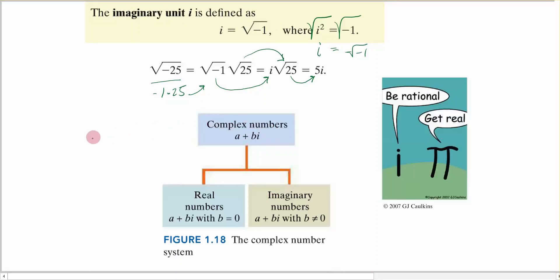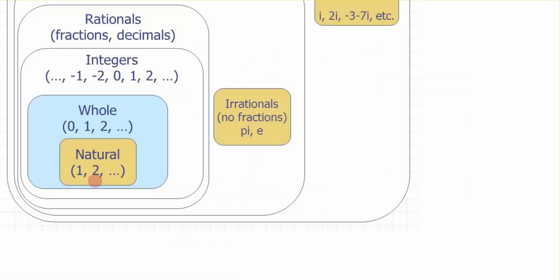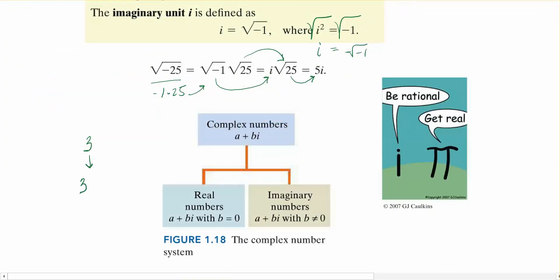For example, if I had the number 3, it can be written as a complex number: 3, which is real, plus the imaginary part, which is 0 times i. Since 0 times anything is 0, that gives me the real part 3. That's what we're looking at in this section: complex numbers and what we're going to be able to do with them in the next videos.